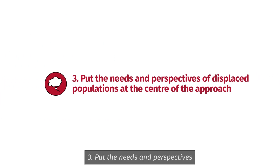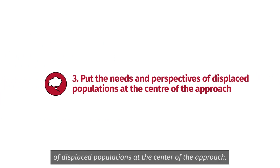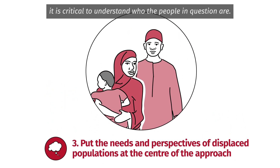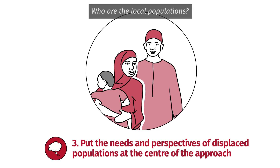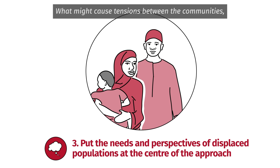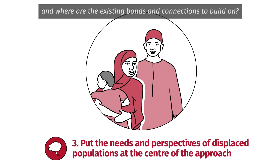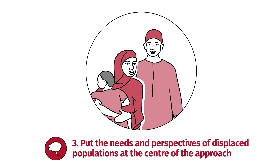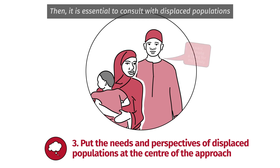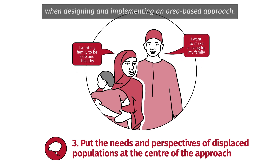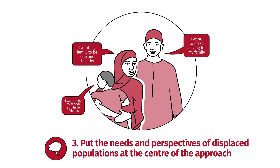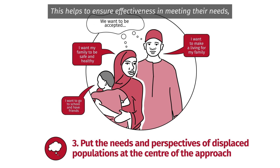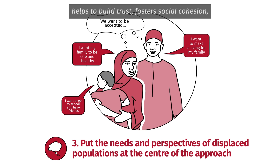Tip three: put the needs and perspectives of displaced populations at the center of the approach. First, it is critical to understand who the people in question are — who are the local populations, where have the displaced people come from, and do they have any history in the area? What might cause tensions between communities, and where are their existing bonds and connections to build on? Then, it is essential to consult with displaced populations when designing and implementing an area-based approach. This helps ensure effectiveness in meeting their needs, builds trust, fosters social cohesion, and ensures no one is left behind.